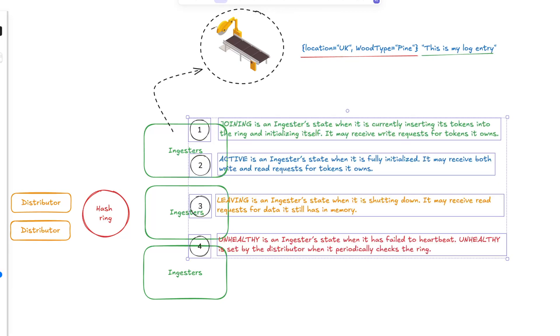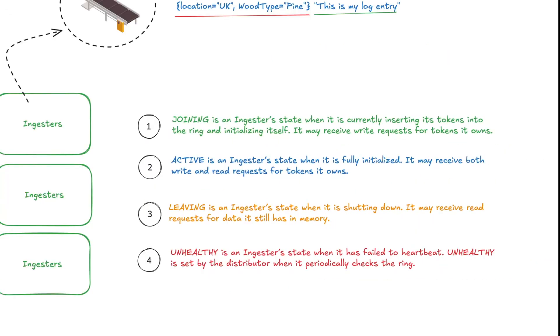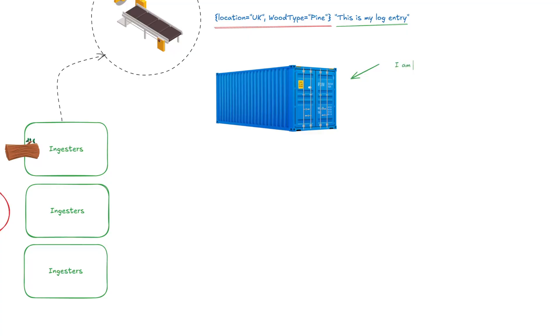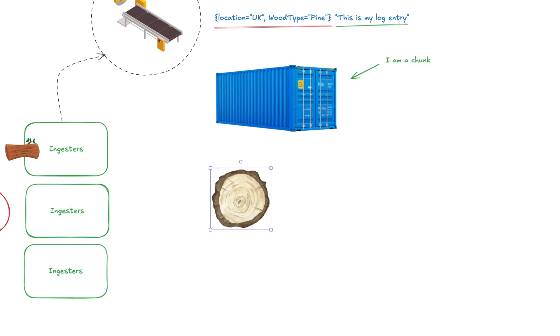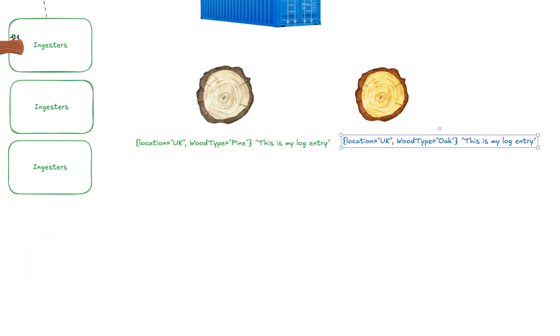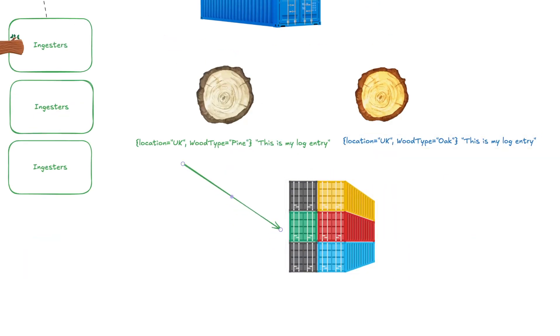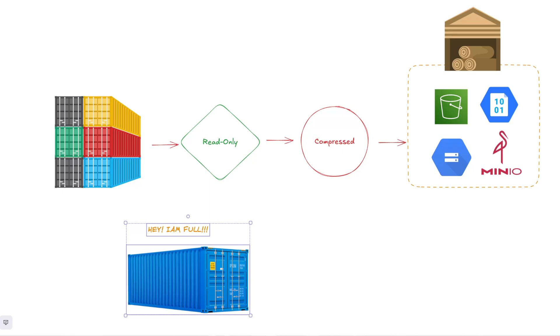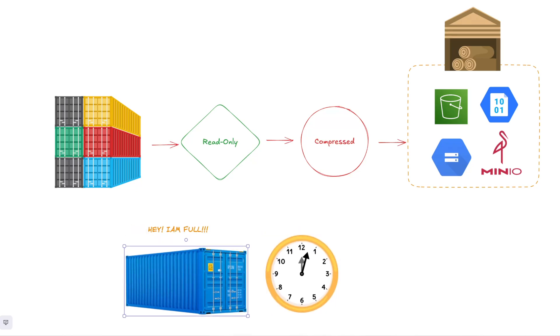Ingesters have four modes when they join the hash ring: joining, active, leaving, and unhealthy. When a batch of logs arrives, the ingester creates or updates a data format type called a chunk. Chunks are containers for logs associated with a specific log stream. In our scenario, all of the logs have a label key called wood type — logs with wood type pine are processed into the same chunk, and those of type oak are processed into a different chunk. Chunks eventually turn read-only, are compressed, and then written to object storage. This happens when the current chunk has reached its capacity, too much time has passed, or when a flush occurs.